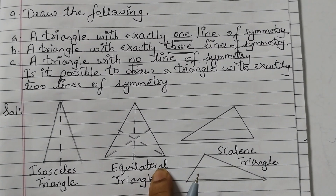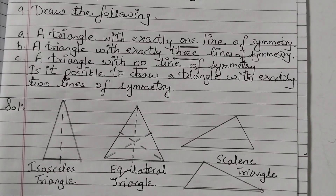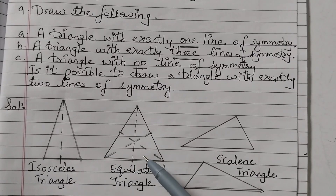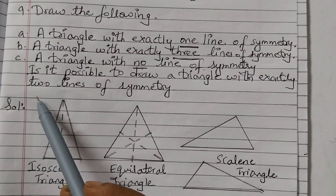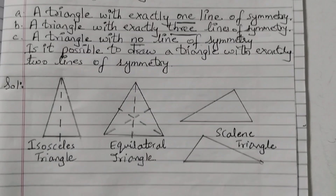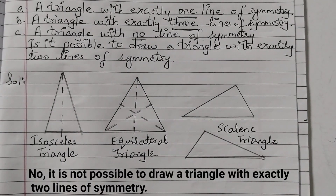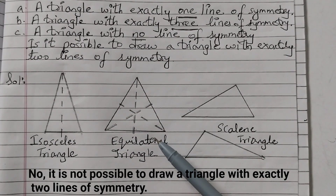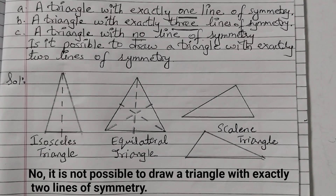This one is a little difficult to draw with a ruler, but with measurement you can do it. So these are the three triangles: isosceles with one line of symmetry, equilateral with three lines of symmetry, and scalene with no line of symmetry. The next part is: is it possible to draw a triangle with exactly two lines of symmetry? The answer is no. It is not possible — either we can have one line of symmetry or three lines of symmetry; we cannot have a triangle with exactly two lines of symmetry. I hope this concept is clear to you. Thank you.